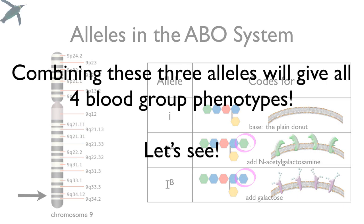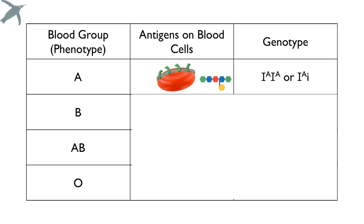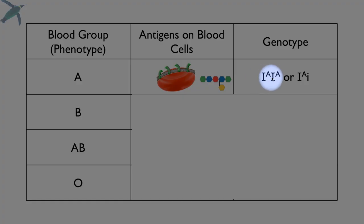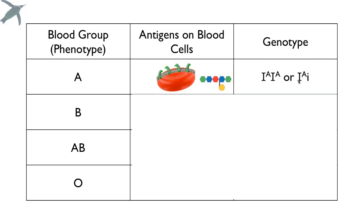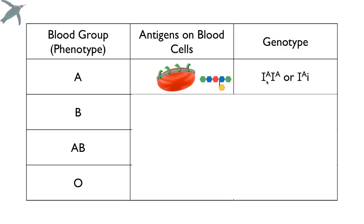When you combine the three alleles, we're going to make all four blood group phenotypes. There are two ways that someone could inherit the A phenotype. You can be homozygous for A, meaning both parents gave you the allele to make the A sprinkles. But you could also inherit only one copy — one parent gave you the information to make A sprinkles, and the other parent gave you the plain donut information. Either way, whether you're homozygous or heterozygous, you're going to be blood type A.